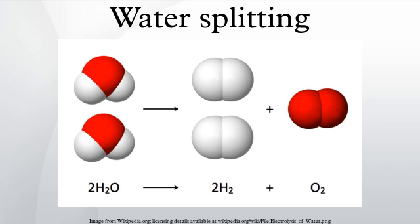In photosynthesis, water splitting donates electrons to power the electron transport chain in photosystem II.